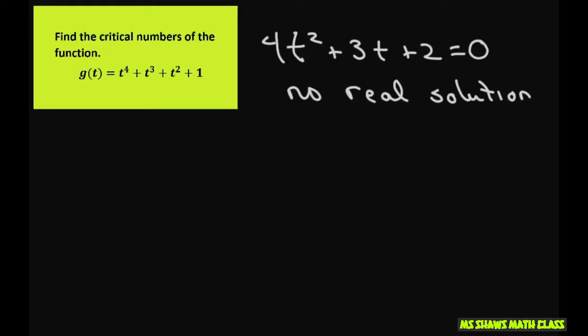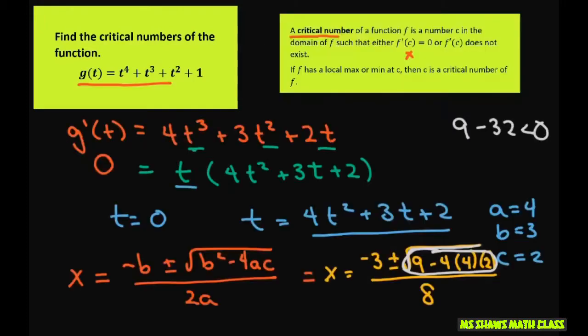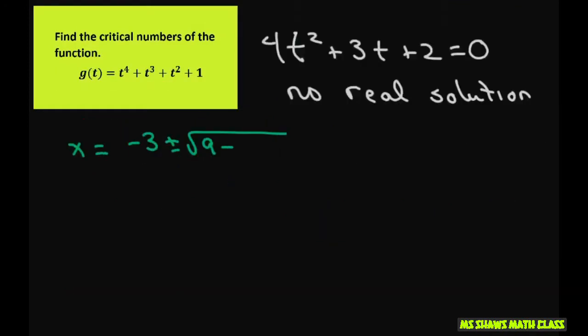Let's just write it out: it was negative 3 plus or minus square root of 9 minus 32, and this was over 8.